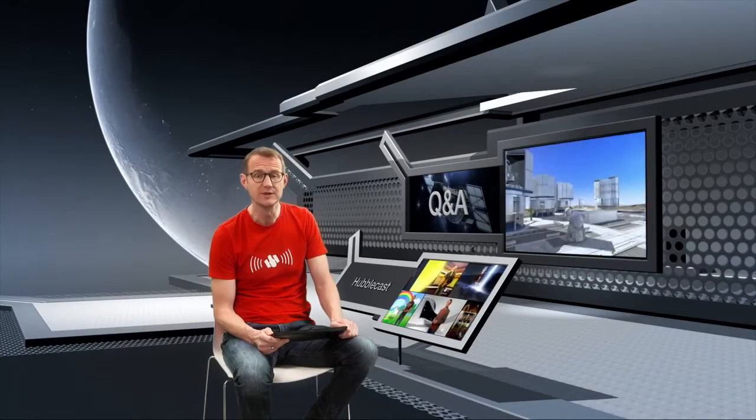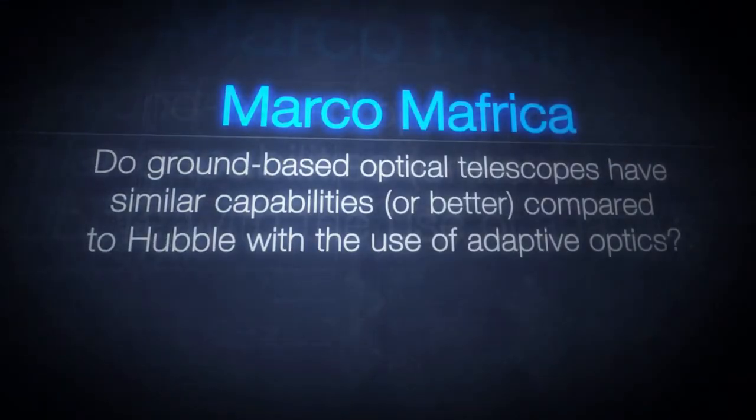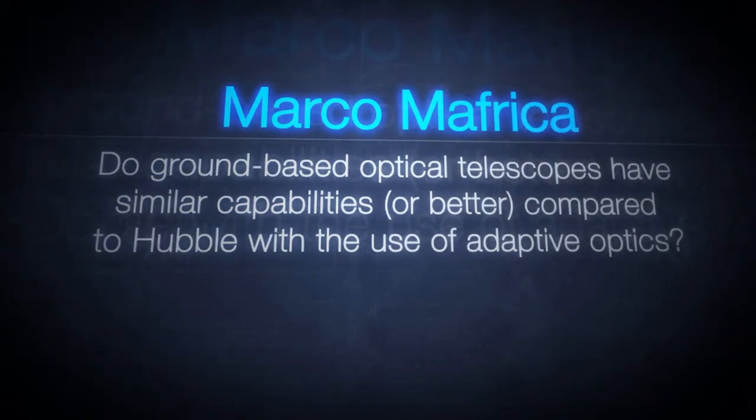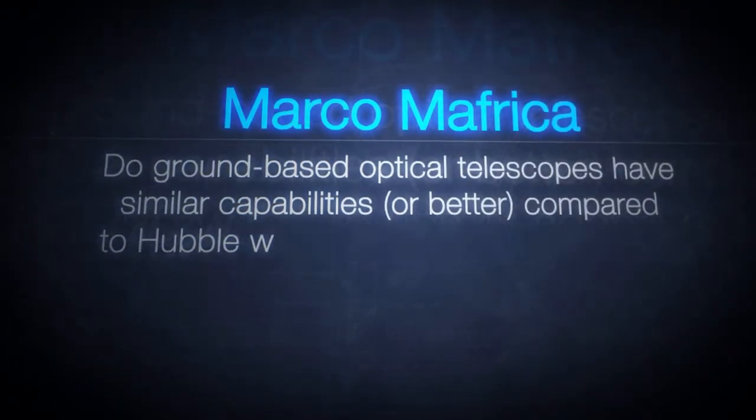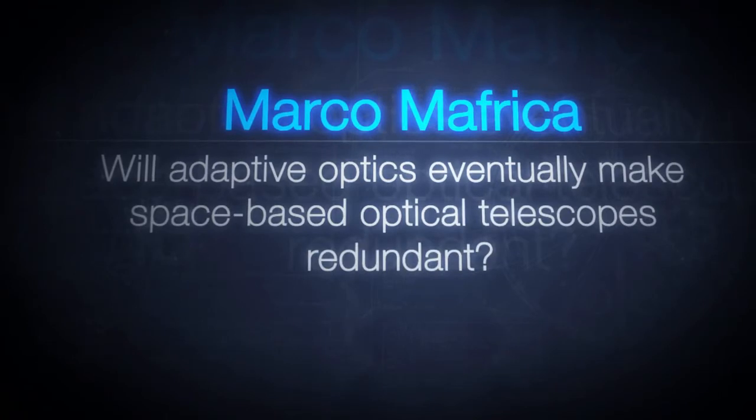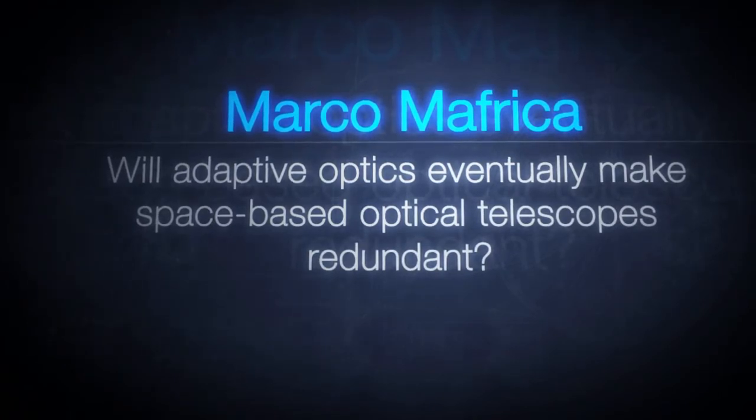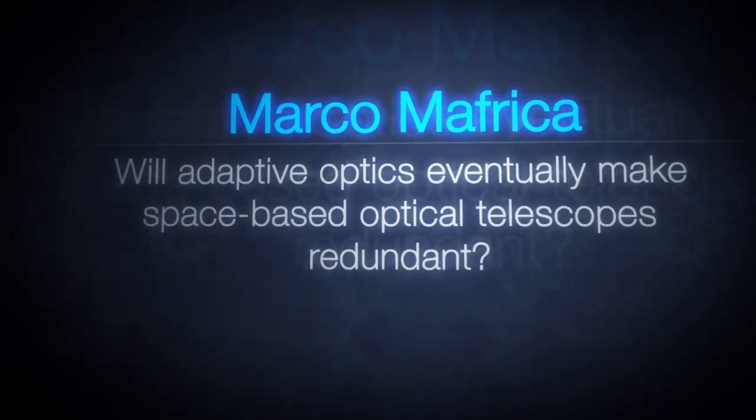The possibility of a collision with space debris is definitely a downside for space telescopes. Some of you wanted to know more about the pros and cons of space versus ground-based telescopes. Do ground-based optical telescopes have similar capabilities or better compared to Hubble with the use of adaptive optics? Will adaptive optics eventually make space-based optical telescopes redundant?